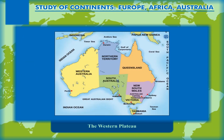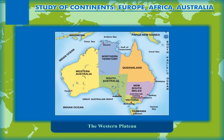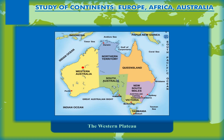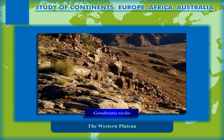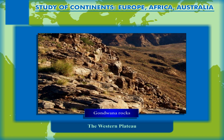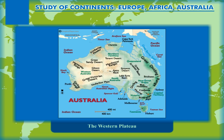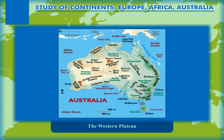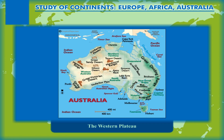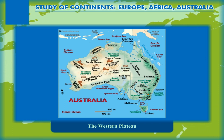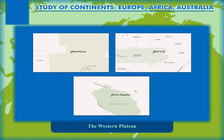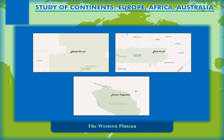The Western Plateau lies on the western part of the continent and covers about two-thirds of the continent's area. It extends mainly over the states of Western Australia, South Australia and Northern Territory. The rocks of the plateau resemble those of the Deccan Plateau of India and are geologically called Gondwana Rocks. The plateau has a few mountain ranges like the Darling Range, McDonnell Range, Hammersley Range and Musgrave Range. The Great Sandy Desert, the Gibson Desert, the Great Victoria Desert and the Simpson Desert also form part of the plateau. The mountain peaks in this region include Mount Bruce, Mount Augustus and the Bluff Knoll.